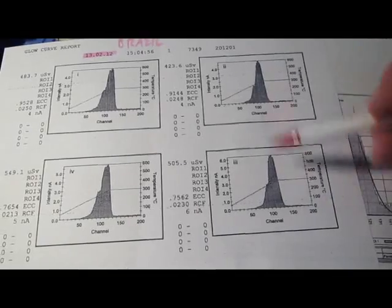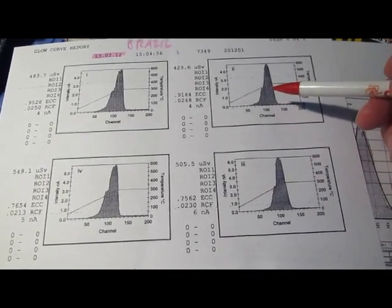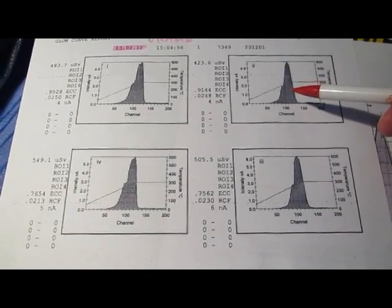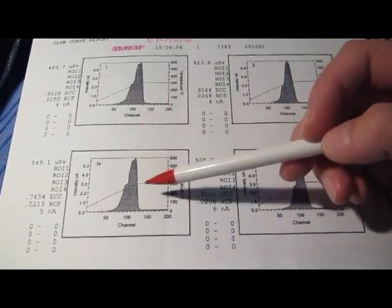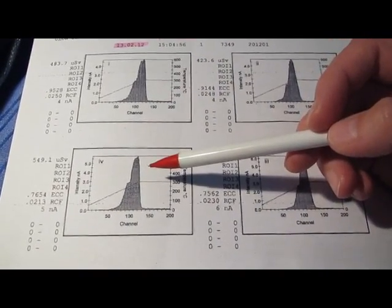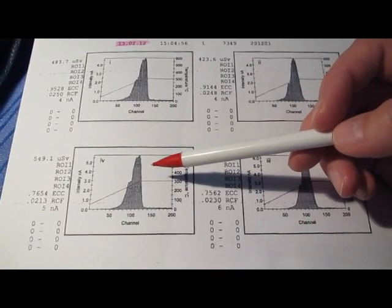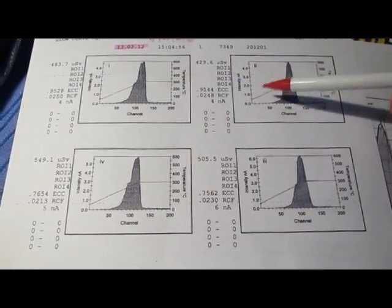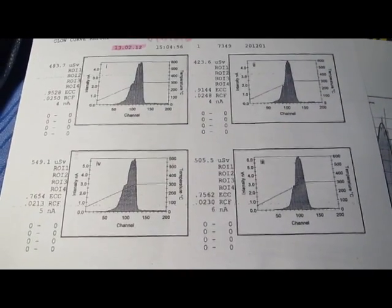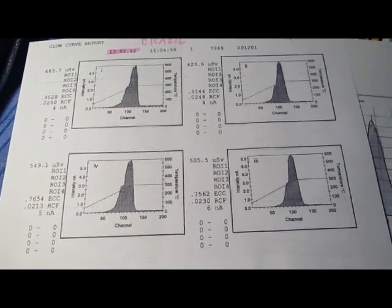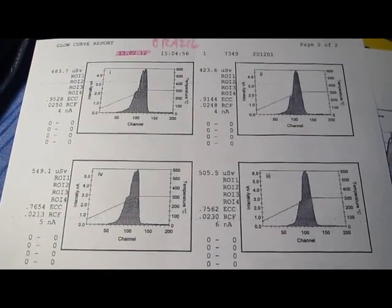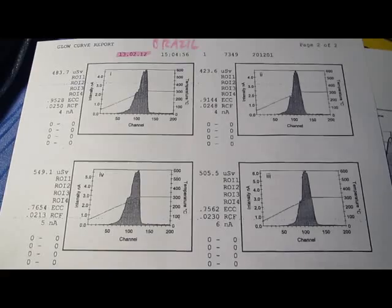Instead of just having one detector, the albedo dosimeter has four detectors: two lithium fluoride detectors that contain lithium isotope-6 that is sensitive to neutron and gamma radiation, and two detectors with lithium isotope-7 that is only sensitive to gamma radiation. By telling the difference between the two, you can actually tell apart a neutron from a gamma dose. It's also sensitive to high energy beta radiation.